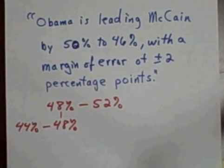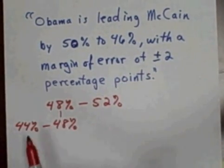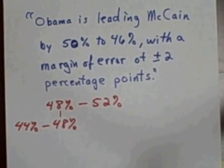So in this case, and sometimes they would say this in the news, that they would say that Obama and McCain are really at a statistical tie because statistically, Obama really could be at 48% and McCain really could be at 48% and therefore be at a tie.